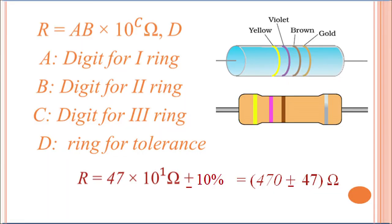If instead of golden color, supposing you have a silver ring, then silver ring signifies a tolerance of 10%. In case, instead of a golden color, you have a silver ring here, then the value would be 470 ± 47 ohms.